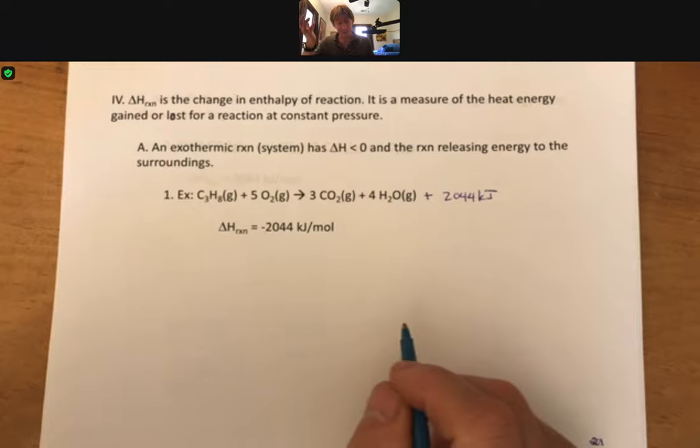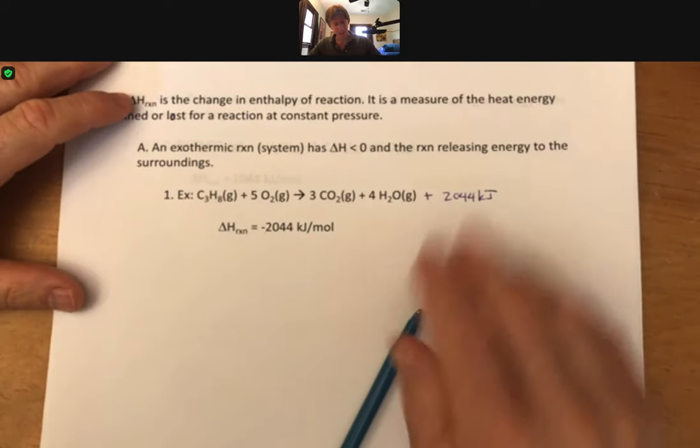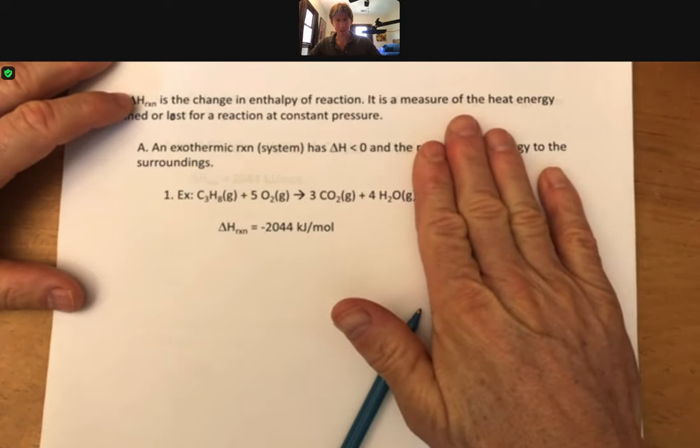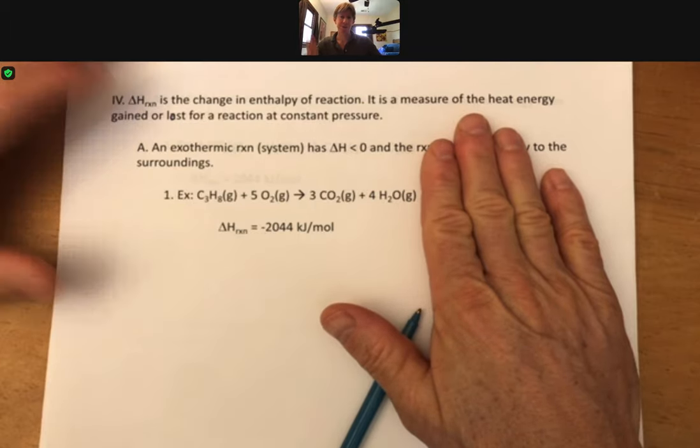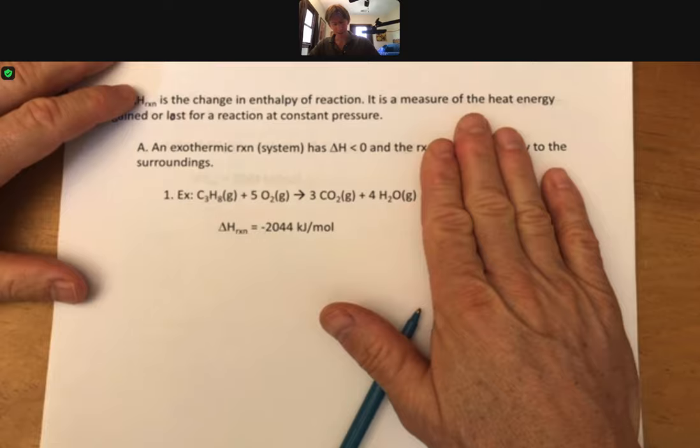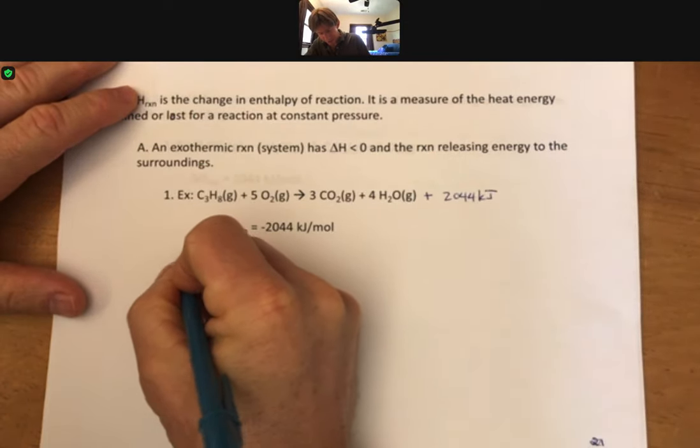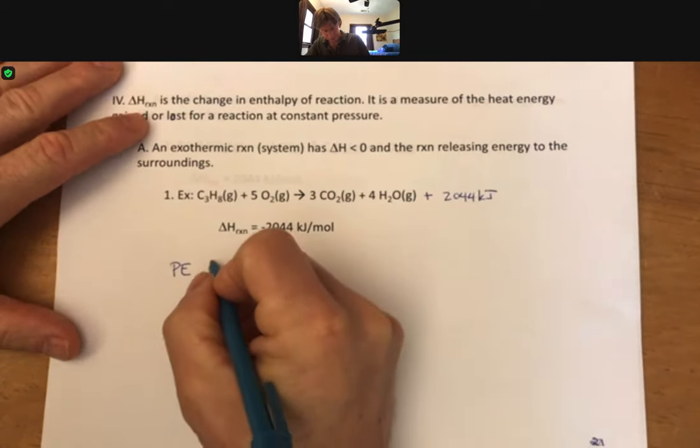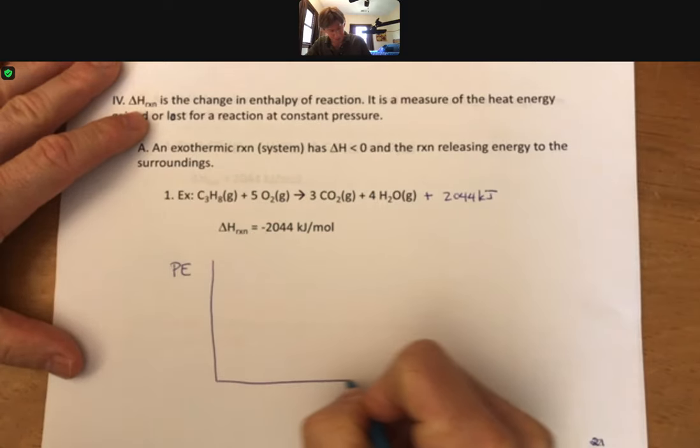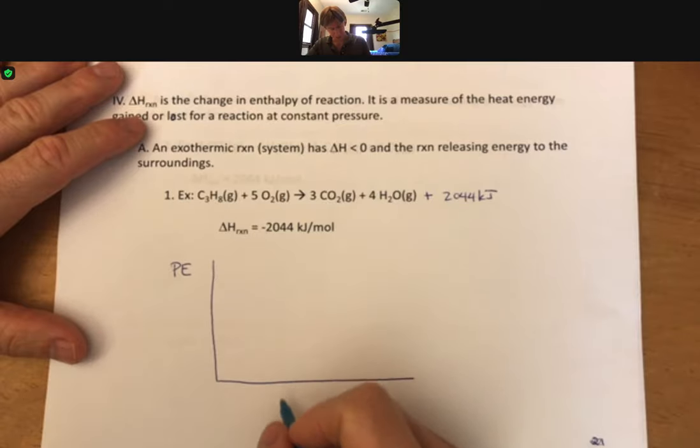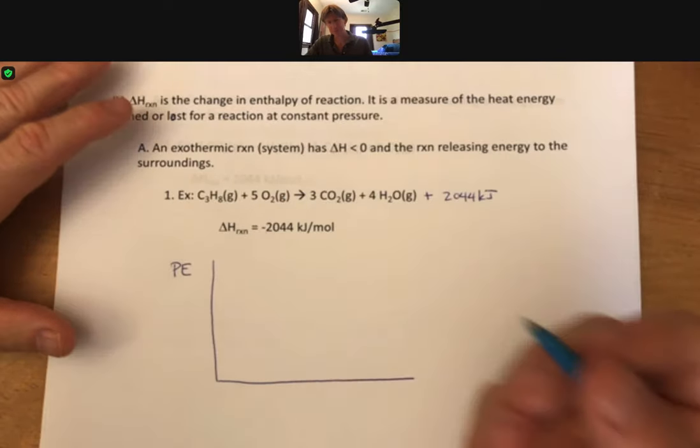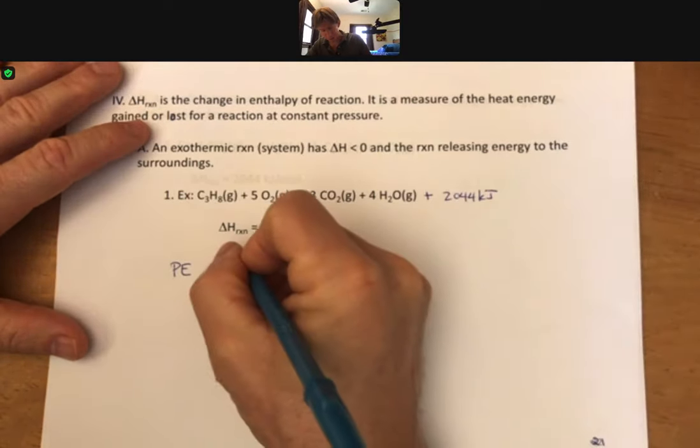Now, what else does this mean? Well, if we take away the energy and we come back to think about potential energy, something we've talked about way long ago. So if I were to say potential energy and make a little plot here, this is what's called a reaction energy diagram.